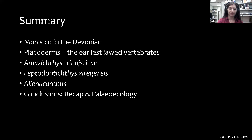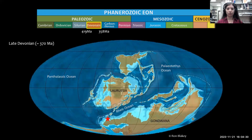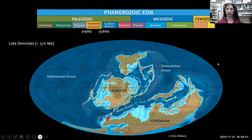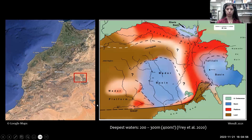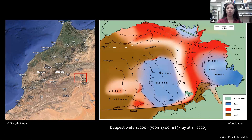We have a map of the world during the late Devonian, about 370 million years ago. The continents look quite different from today. The red star shows where Morocco was located at the time. Zooming in, the Anti-Atlas is highlighted in the red square. During the late Devonian, the Anti-Atlas was divided into two main basins: the Maeda and the Tafilaut, and their corresponding platforms.